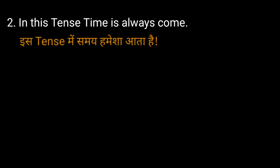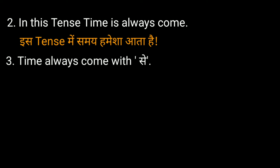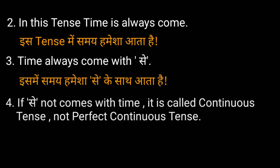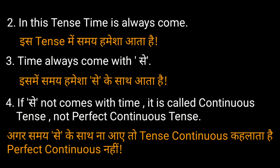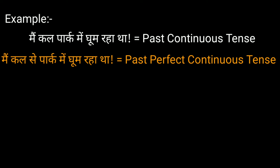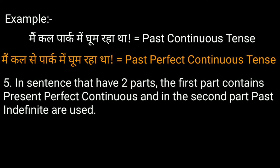Second point: in this tense, time always comes. इस tense में समय हमेशा आता है. Third point: time always comes with 'से'. इसमें समय हमेशा से के साथ आता है. Fourth point: if 'से' does not come with time, it is called continuous tense, not perfect continuous tense. अगर समय से के साथ न आए तो tense continuous कहलाता है, perfect continuous नहीं. For example, मैं कल पार्क में घूम रहा था — यह past continuous tense है. और मैं कल से पार्क में घूम रहा था — इसमें कल से का प्रयोग हुआ है, इसलिए यह past perfect continuous tense है.